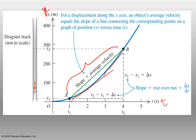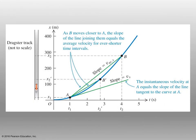The slope is rise over run. In this case, the rise is x and the run is t. The tangent line shows the instantaneous velocity at point A, where the tangent line crosses. As B moves closer to A, the line joining A and B gives a shorter time interval, and the slope is shorter than the original slope.